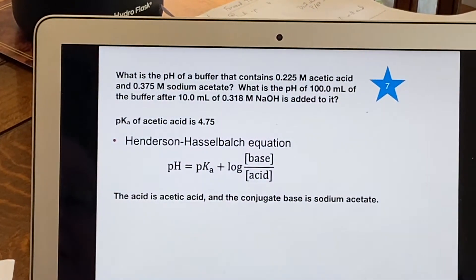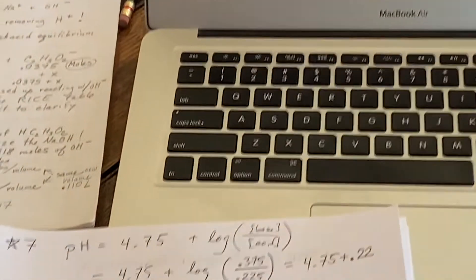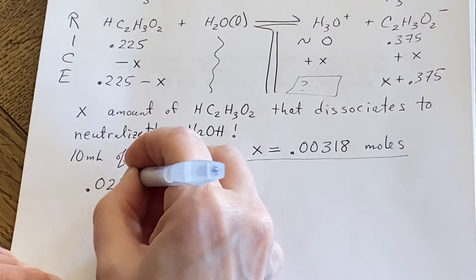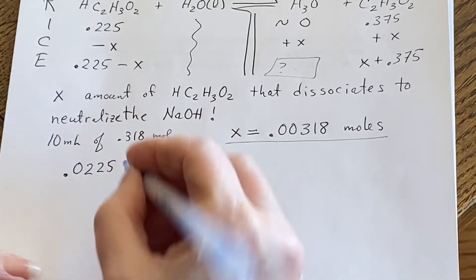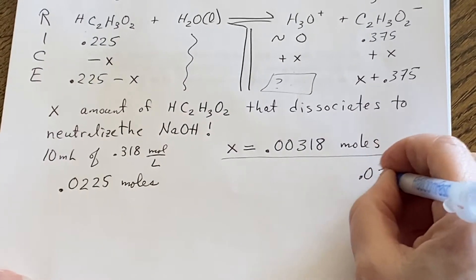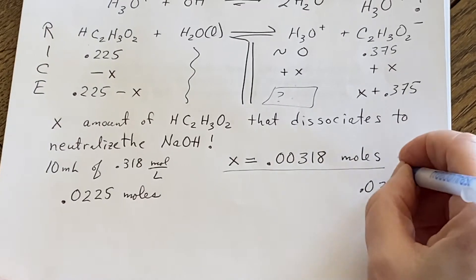So all of these numbers are going to be changed. I am going to say that it's 0.0225 moles of my acid. And it's going to be 0.0375 moles of my conjugate base.